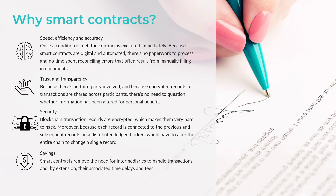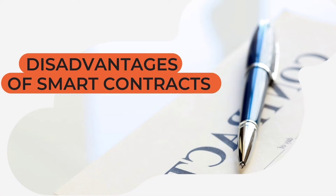The second advantage is trust and transparency. Where there is no third party involved and the system itself is the guarantee, contracts are trustworthy and cannot lie. Security — I've already talked about privacy and security in a previous video, so check that out. Savings: smart contracts do not involve third parties, and nobody needs to check information manually, so you pay less.